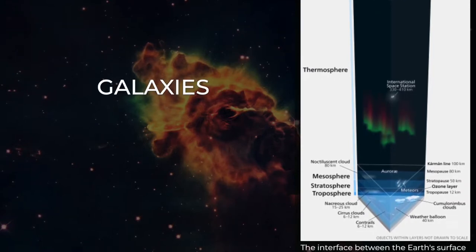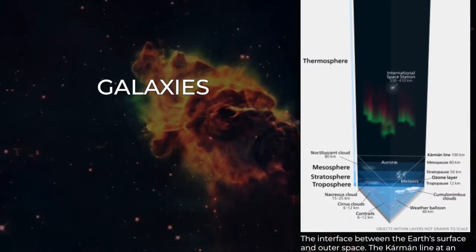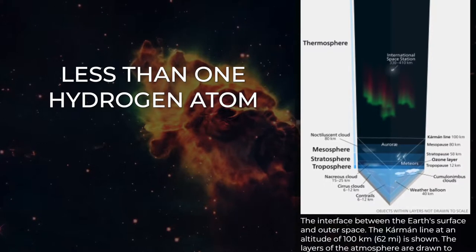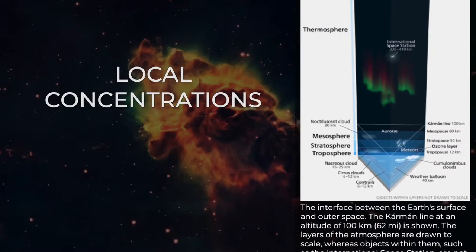The plasma between galaxies accounts for about half of the baryonic, ordinary, matter in the universe. It has a number density of less than one hydrogen atom per cubic meter and a temperature of millions of kelvins.